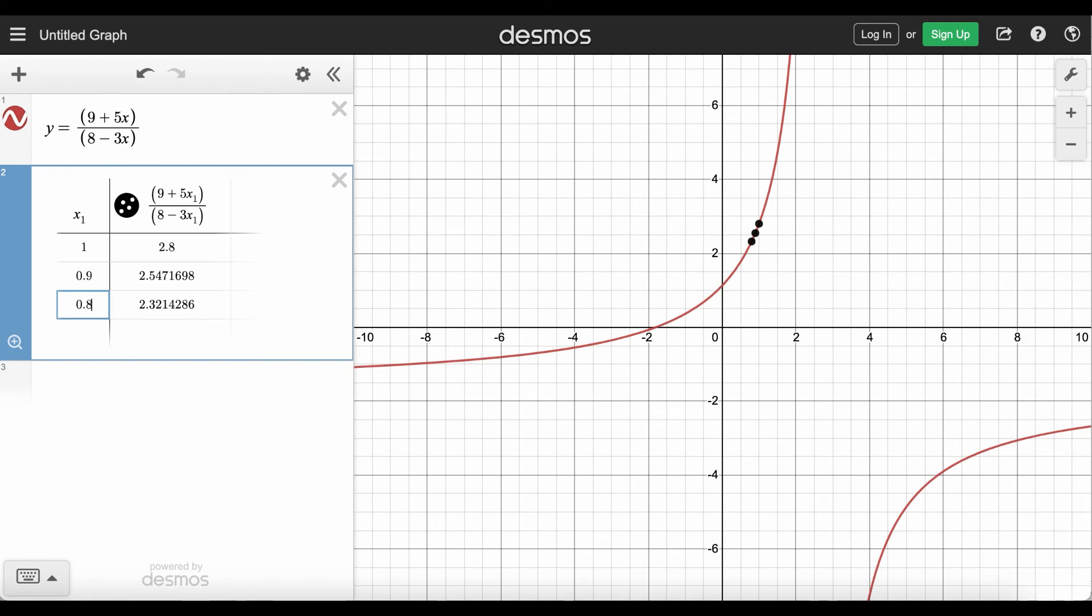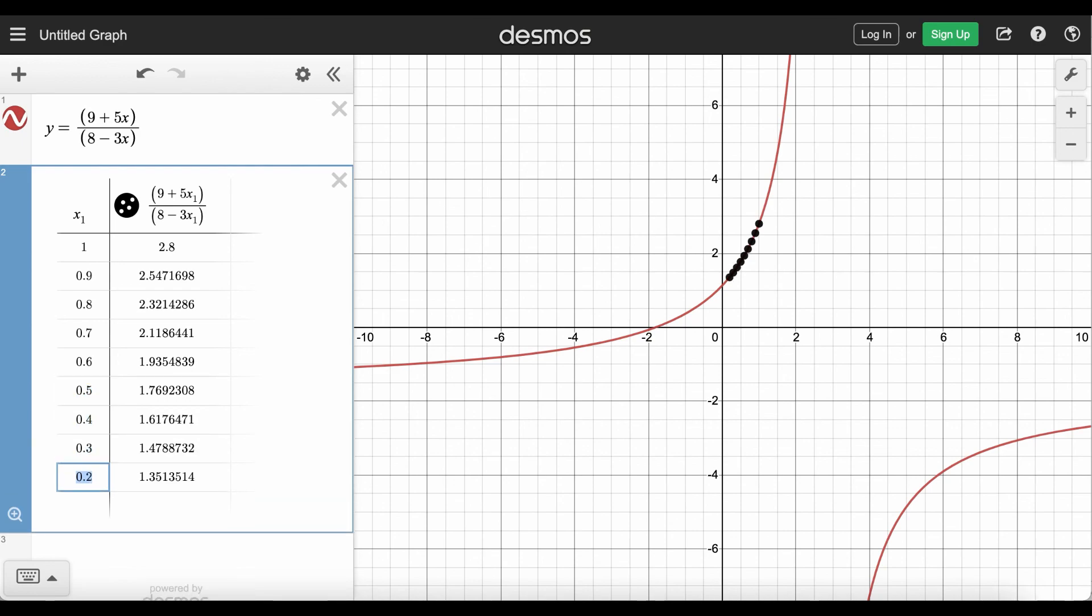And then I'm just going to hit enter instead of typing in the next item which would be 0.7. I'm just going to hit enter and see if Desmos has the pattern and it does. So I can just keep hitting enter and Desmos will now decrease by 0.1.